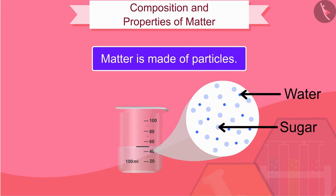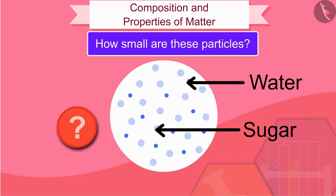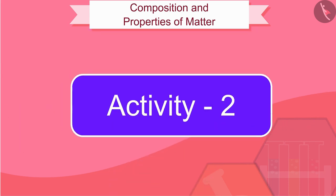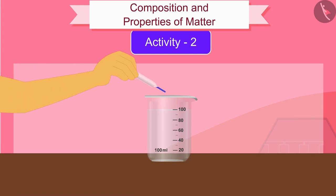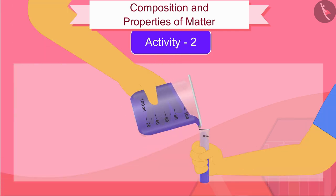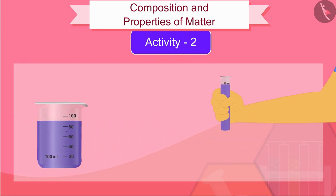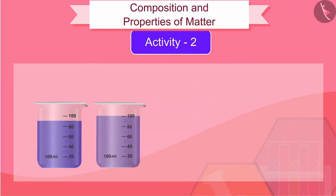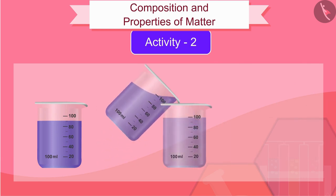We have come to know that matter is made of particles, but how small are these particles? Let us try to find this out by an activity. Dissolve five drops of ink in hundred ml of water. Take out about 10 ml of this solution and mix it in 90 ml of water. Similarly keep this solution diluted for five to eight times.